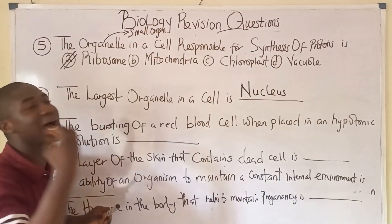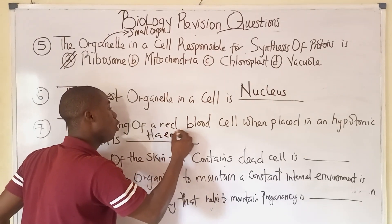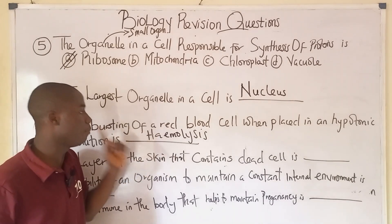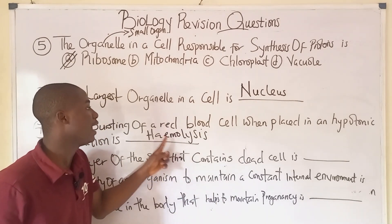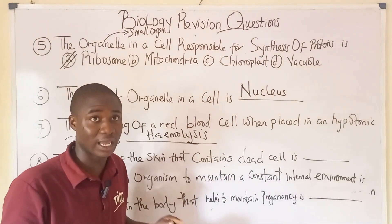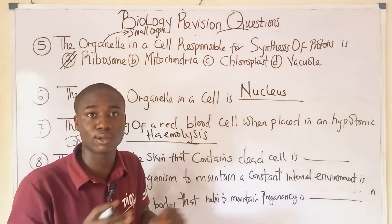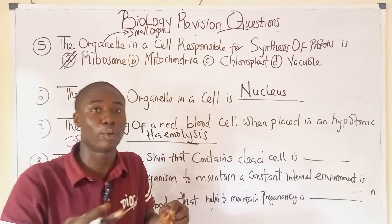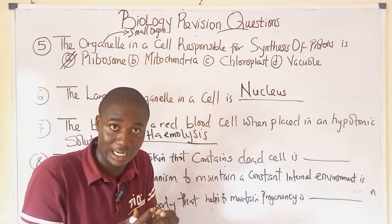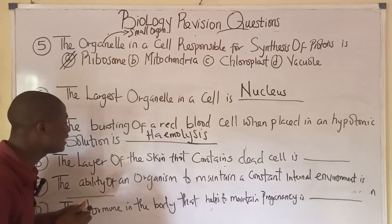Question seven: the bursting of a red blood cell when placed in a hypotonic solution is called hemolysis. Red blood cells can burst because they are animal cells. Plant cells do not burst due to the presence of a thick cell wall. Instead, plant cells will shrink, and that is called plasmolysis.